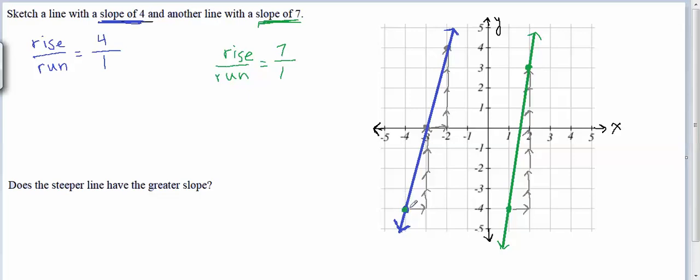So if I wanted to draw a slope of 7 line here, I'd go over 1 and up 1, 2, 3, 4, 5, 6, 7, taking me to this point here.